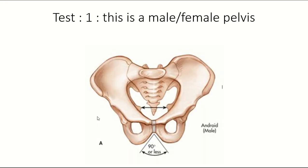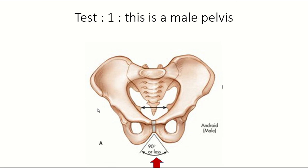Test questions: In a male pelvis, the subpubic angle is less, the sacrum is longer and narrower, the pelvic inlet is heart-shaped, and the pelvic cavity is not roomy.